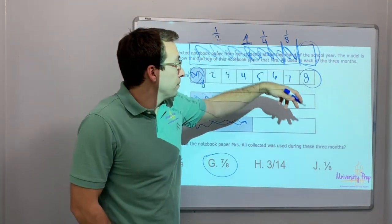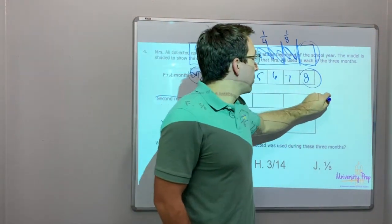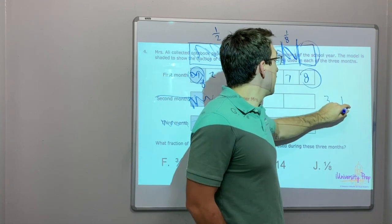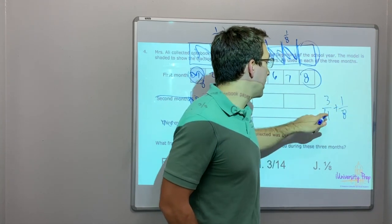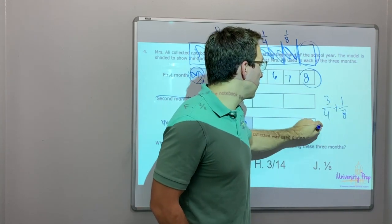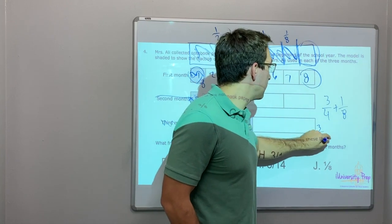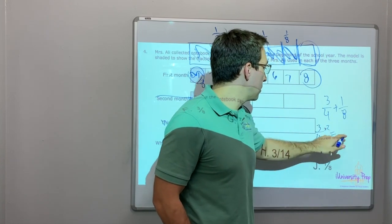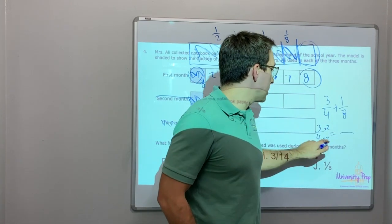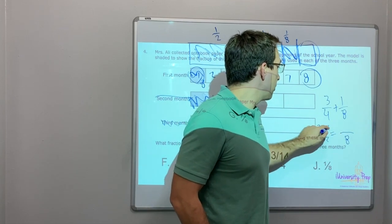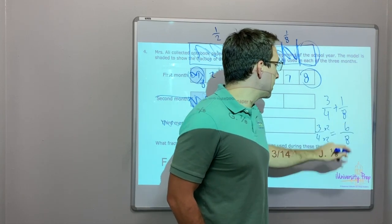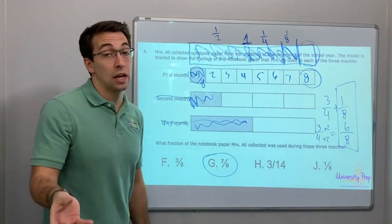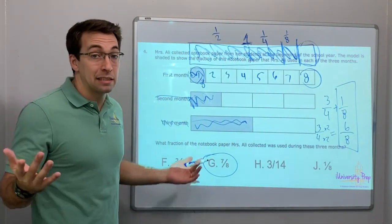So what is three quarters plus one eighth? We do three quarters times two over two — that gives us six eighths. Then six eighths plus one eighth is seven eighths.